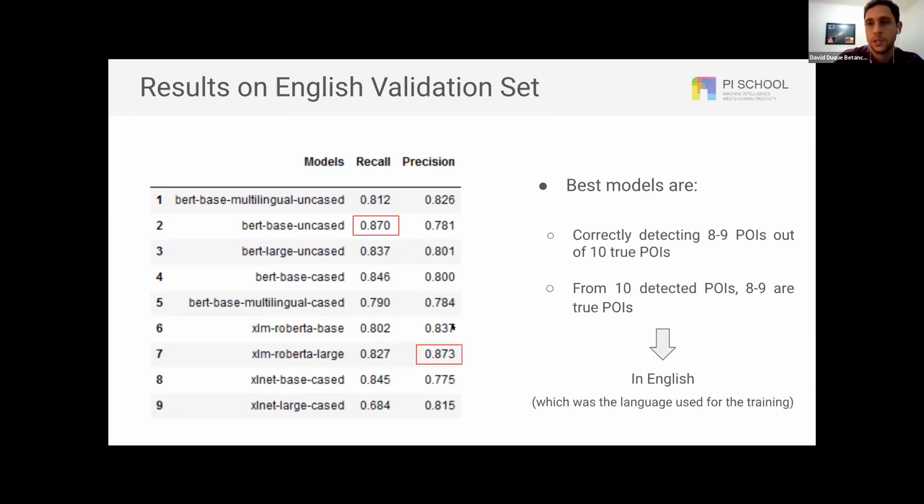which basically means that we are correctly detecting eight to nine points of interest out of ten true points of interest. And from ten detected points of interest, eight to nine are true points of interest. And well, this is done in English. This is performed in English, which is the language we have trained on.